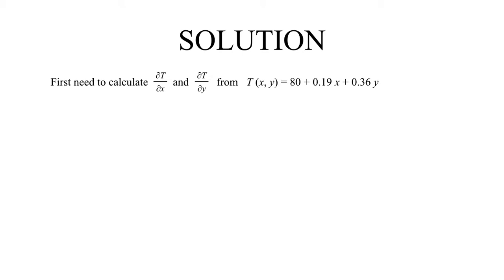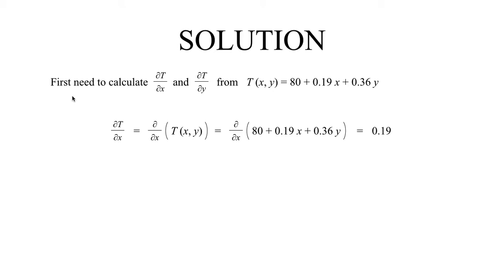To calculate the gradient vector, keeping in mind its definition, we first need to calculate the derivative of our scalar with respect to x — how our scalar field changes in the x direction — and also calculate how it varies in the y direction: partial T partial y, and partial T partial x, using the function we were given. We could also calculate partial T partial z, but we'll see that it's not important. So first we calculate the partial derivative of our function with respect to x. Since the constant term does not depend on x, that goes to 0. The derivative of the 0.19x term is just 0.19 by the power rule. And since the 0.36y term does not depend on x, that also goes to 0. The partial with respect to x means we hold all other variables constant and are only concerned about x.